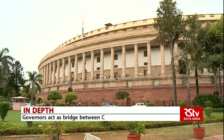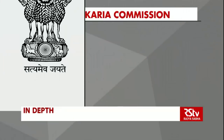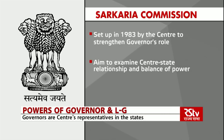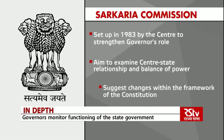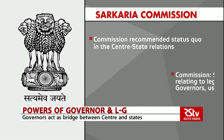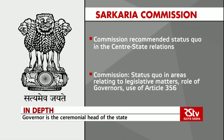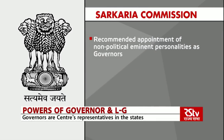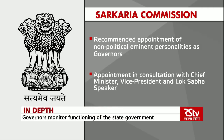The primary function of the governor is to preserve, protect and defend the constitution. When a governor takes over the administration of a state, he appoints advisors. Senior officers are normally appointed as advisors and he runs the administration with their help. The Sarkaria Commission was set up in 1983 by the government to strengthen the governor's role. It recommended status quo in the center-state relationship, especially in areas relating to legislative matters, role of governors, and use of Article 356. It also recommended appointment of non-political eminent personalities as governors, in consultation with the chief minister, vice president and Lok Sabha speaker.